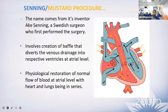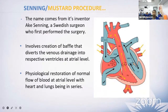The Senning procedure or Mustard procedure is named after its inventor Ake Senning, a Swedish surgeon. It involves the creation of a baffle that diverts venous drainage into the respective ventricles at the atrial level — essentially a physiological restoration of normal blood flow at the atrial level.